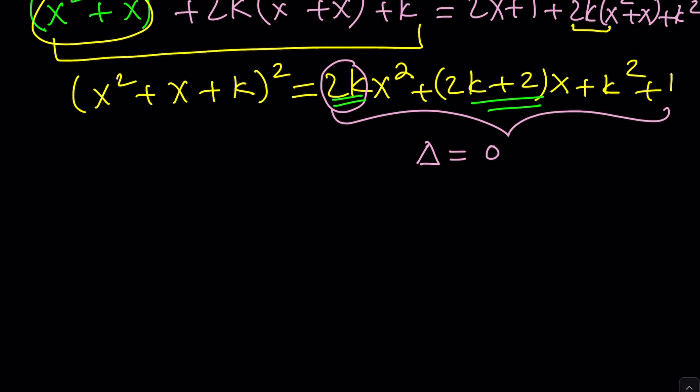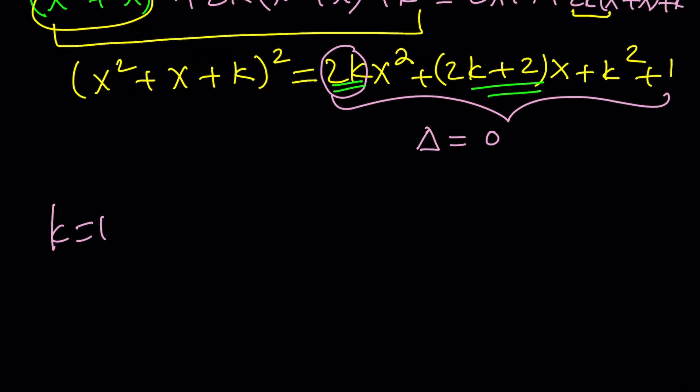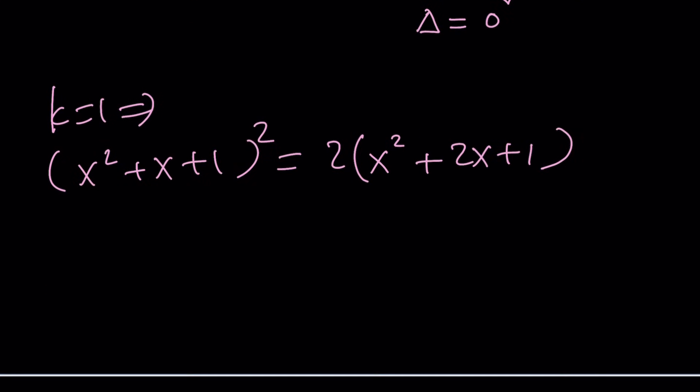We found out in two ways that k is equal to 1. Great. Now let's go ahead and plug it in and take advantage. k equals 1 implies that x squared plus x plus 1 squared is equal to 2 times x squared plus 2x plus 1, as you saw. And now we can make it even better because now notice that the right-hand side can be written as square root of 2 multiplied by x plus 1 quantity squared. By quantity, I mean the product.